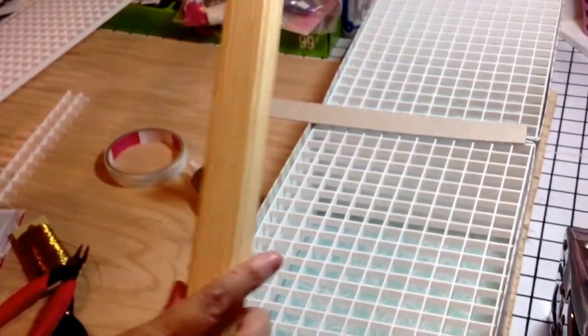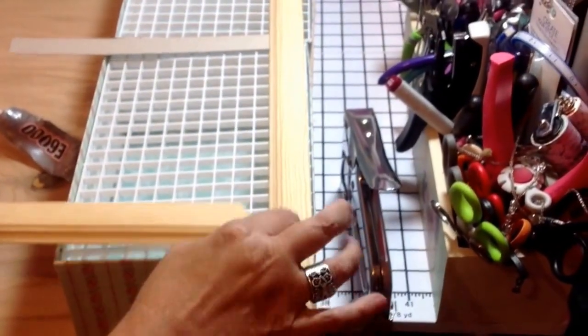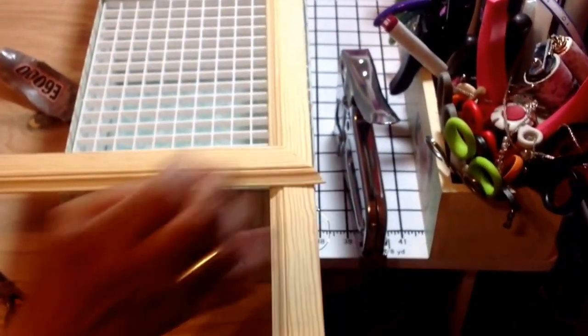Then you're going to come back in with your crown molding and you're going to cover it, miter your ends to match, and you're going to make your frame.